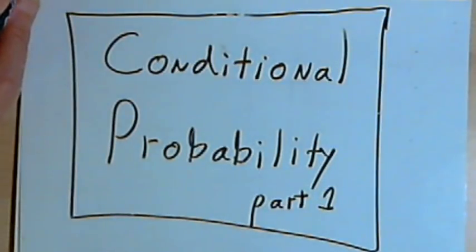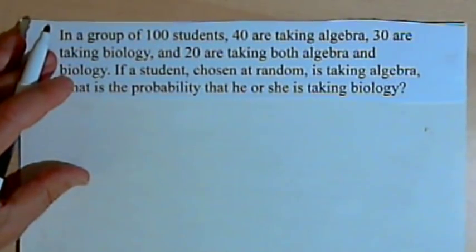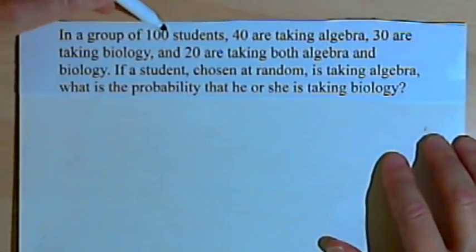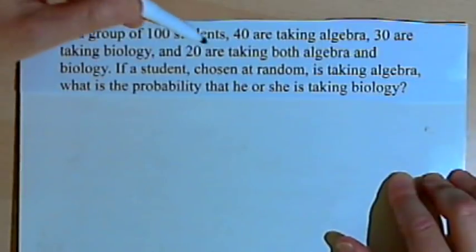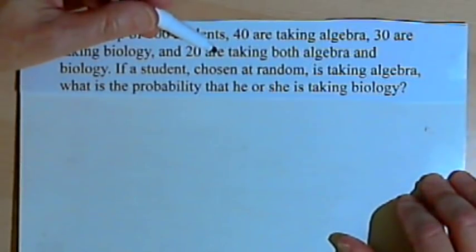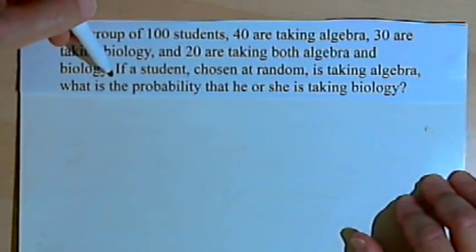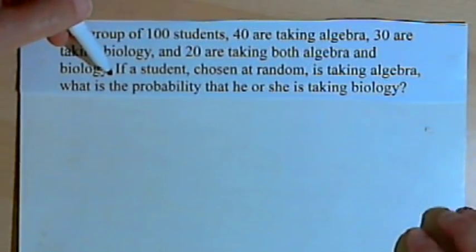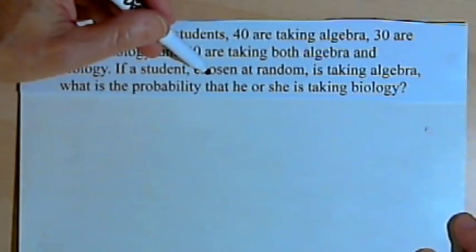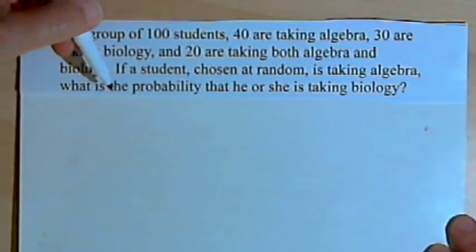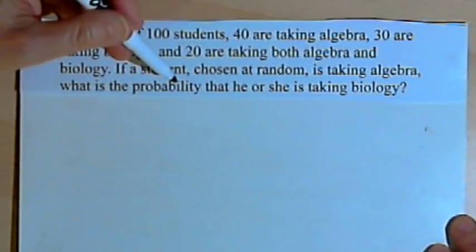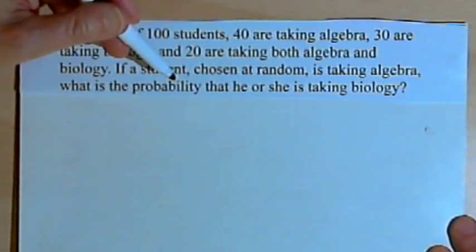Here's the first example. In a group of 100 students, 40 are taking algebra, 30 are taking biology, and 20 are taking both algebra and biology. If a student chosen at random is taking algebra, what is the probability that he or she is taking biology?